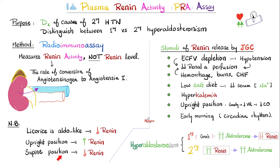Conversely, in the supine position, blood is distributed throughout the body and the kidney is well perfused, so there is less need for renin. Renin release also follows a diurnal variation or circadian rhythm — more renin is released early in the morning, partly because standing up after lying down for hours decreases venous return and cardiac output, signaling the kidney to produce more renin.